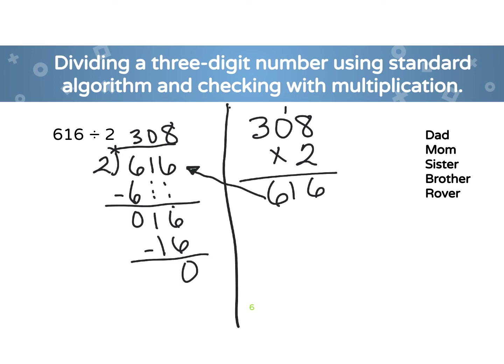If you look here, I have divided. And when I brought down my 1, you will see that I couldn't divide 1 by 2. So I put a 0 to hold my place value. And then I brought down my 6. And then I took 16 divided by 2 is 8. 8 times 2 is 16. And then I came over here and I multiplied to see if I could get the dividend. And I did.